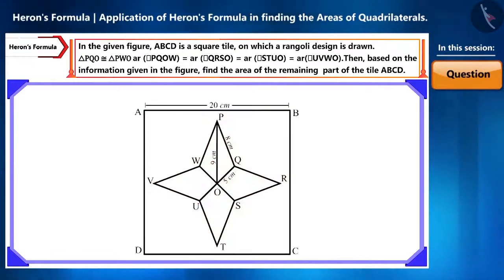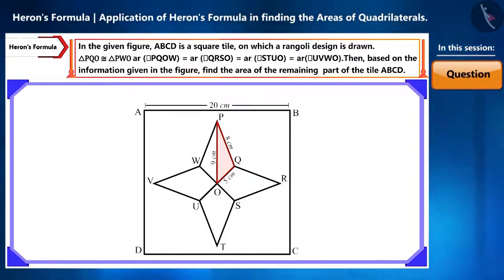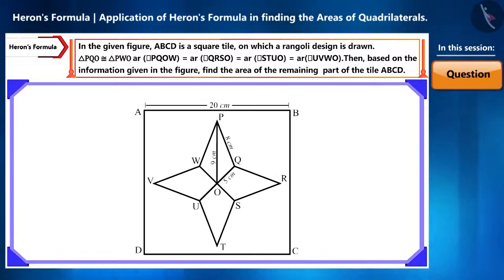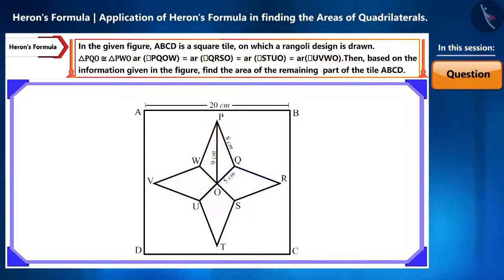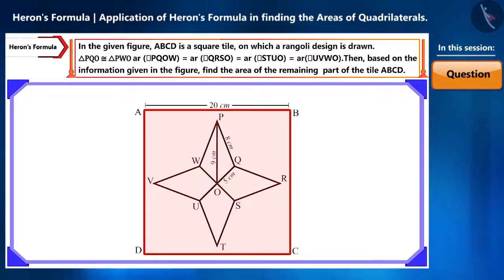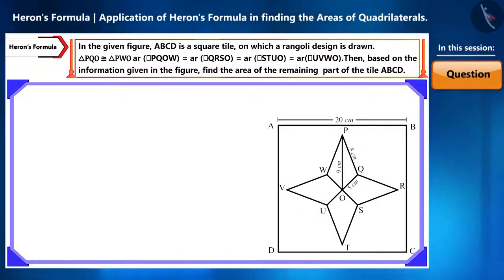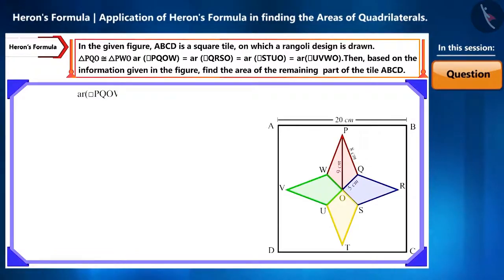On this square tile, a Rangoli design is created in which triangle PQO and triangle PWO are congruent, and the areas of these four quadrilaterals are equal. Now, based on the information given in the figure, find the area of the remaining part of the tile ABCD.